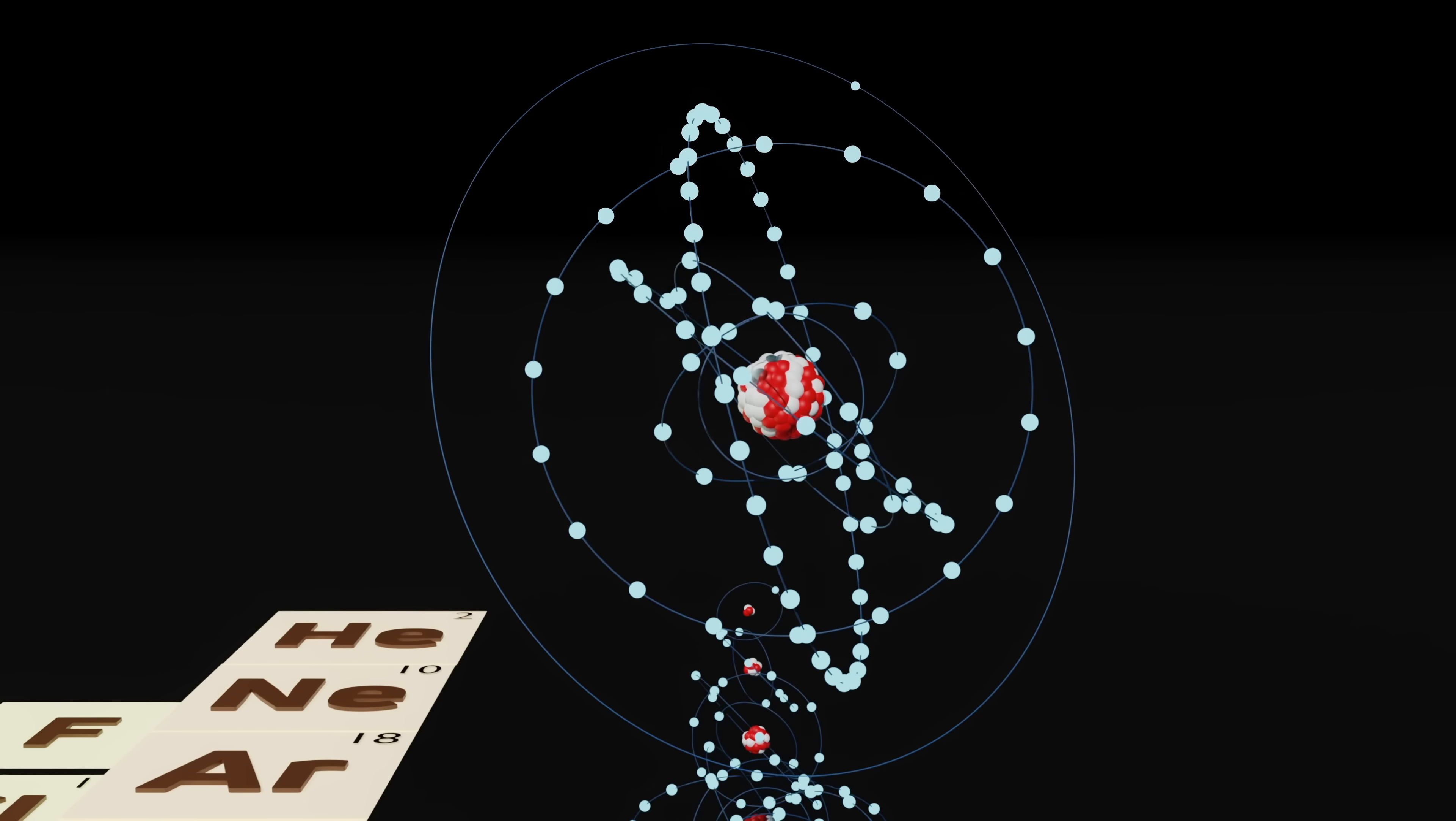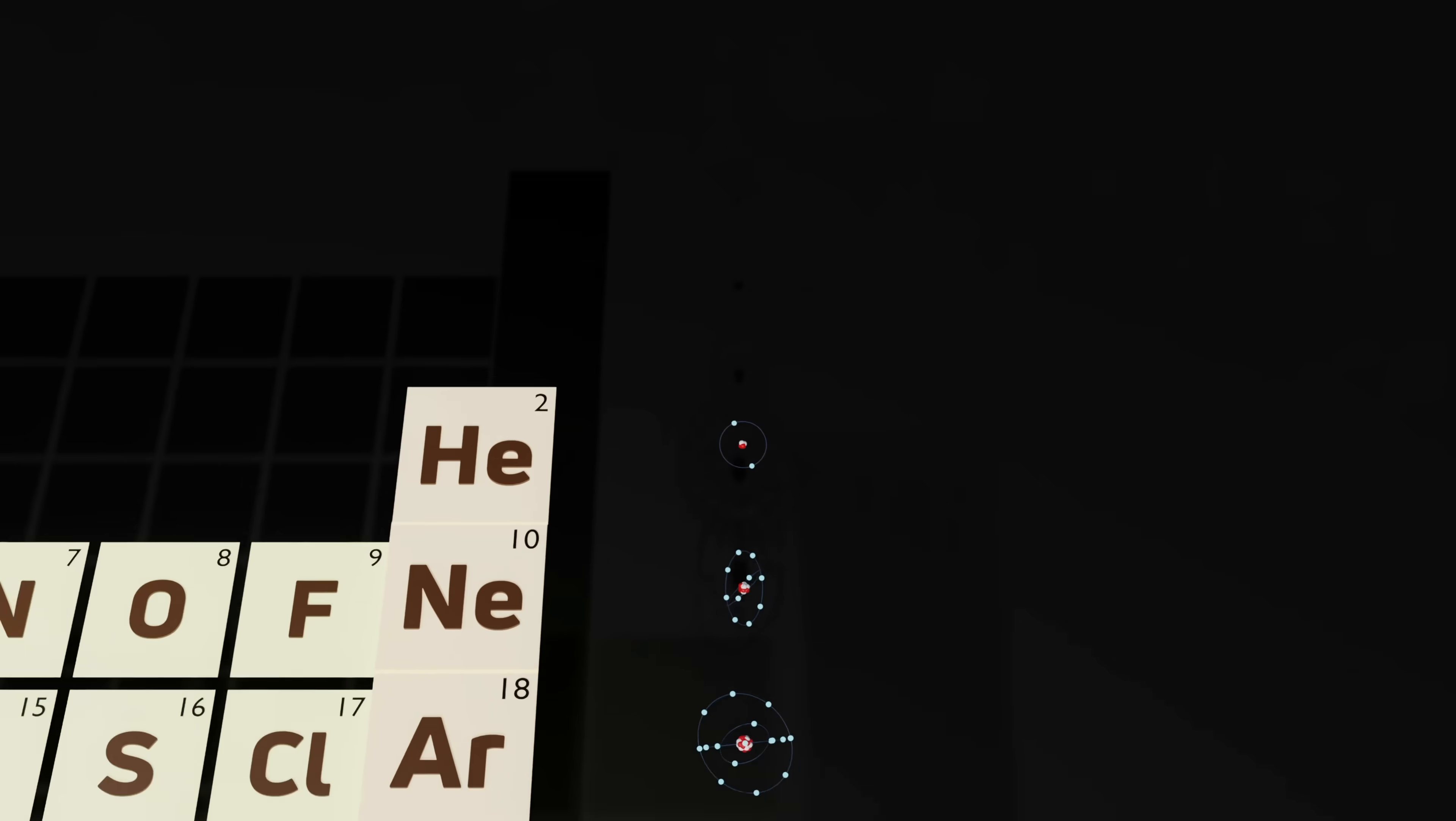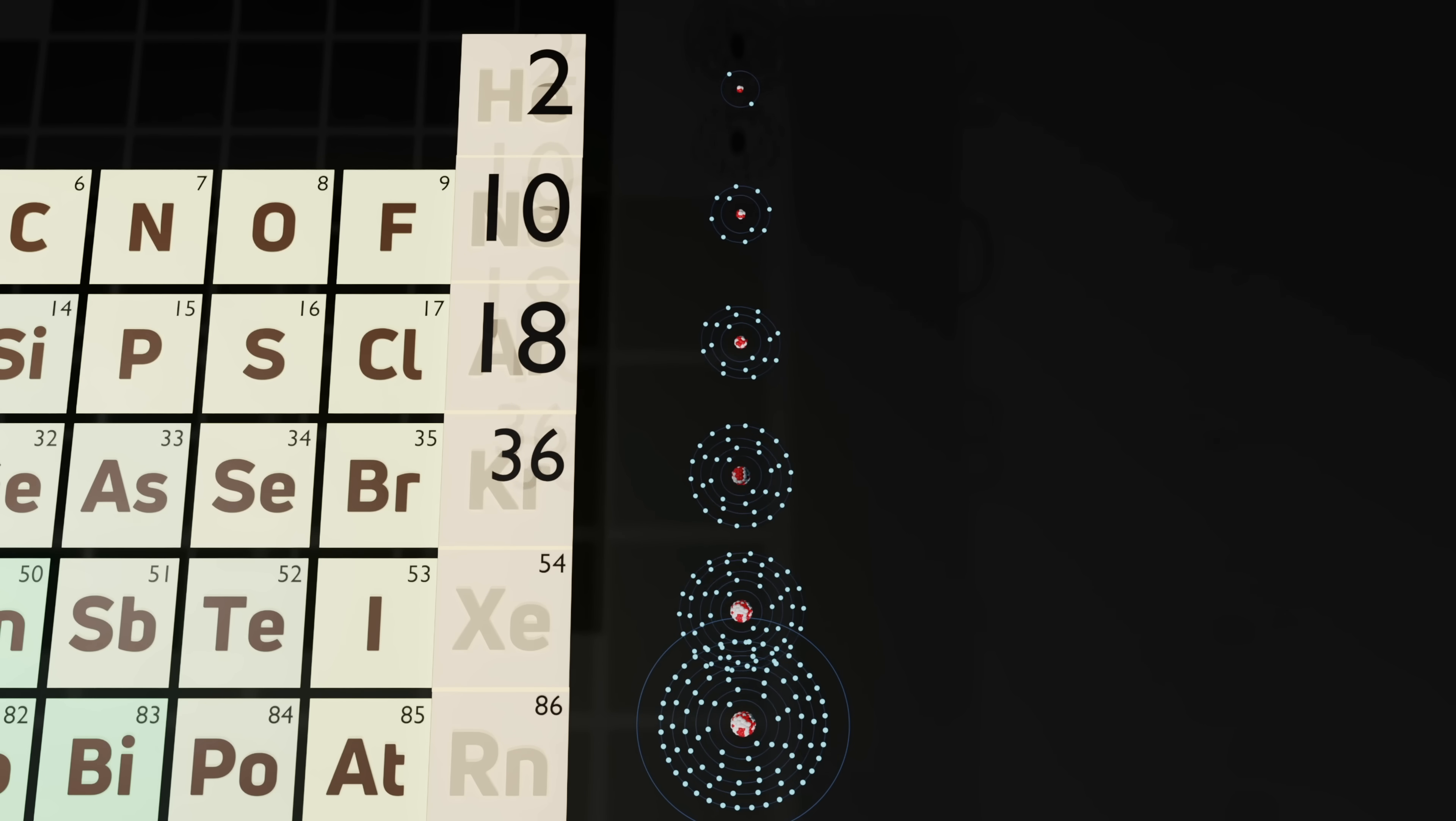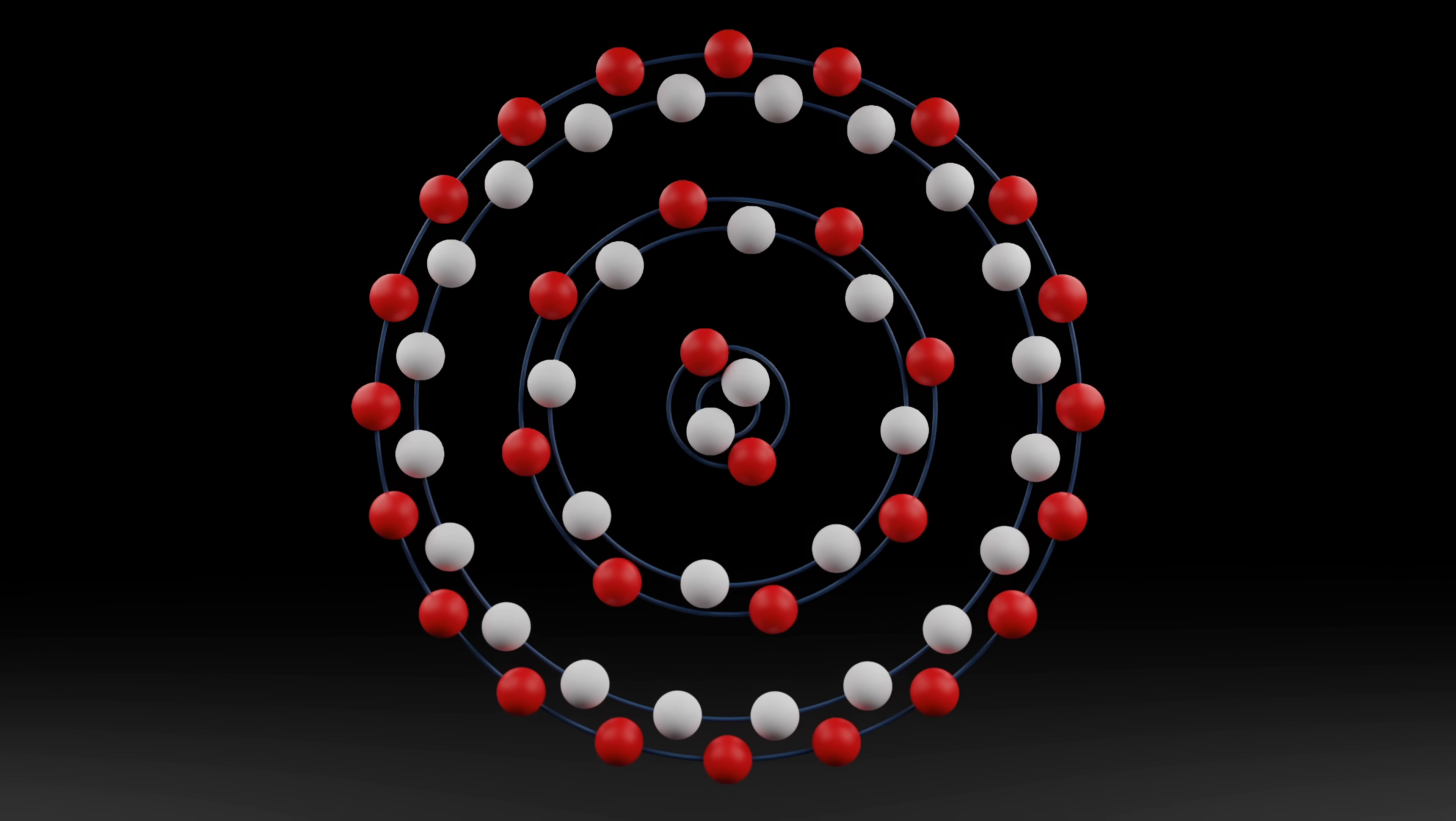If we were to look at the total number of electrons in each shell, we'd see that they follow this sequence: 2, 10, 18, 36, 54, and 86.